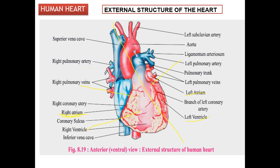There are certain veins and arteries present in the heart: the superior vena cava, right pulmonary artery, and right pulmonary veins. 'Pulmonary' means it is related to the lungs. As discussed in the previous lecture, pulmonary artery carries deoxygenated blood and pulmonary veins carry oxygenated blood. The right coronary artery and left coronary artery supply blood to the heart. The inferior vena cava is responsible for receiving blood from all parts of the body.